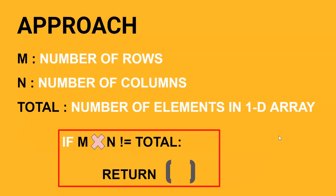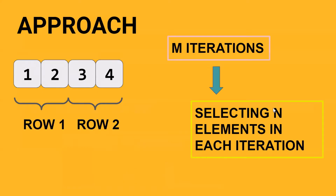If the total number of elements equals M cross N, then you have M iterations over the one-dimensional array, and in each iteration you have to pick N elements. We need M iterations because you need M rows in the output 2D array, and you pick N elements in each iteration because the two-dimensional array has N columns. In this example, in the first row you will pick two elements which are 1 and 2, and in the second row you will pick two elements, 3 and 4.